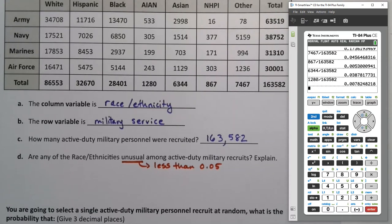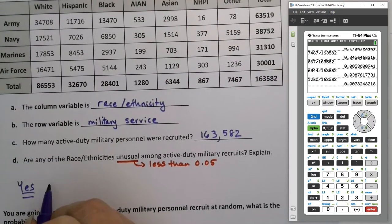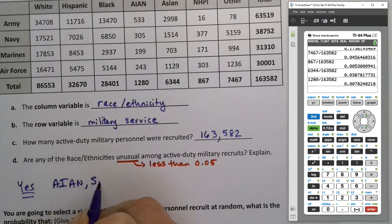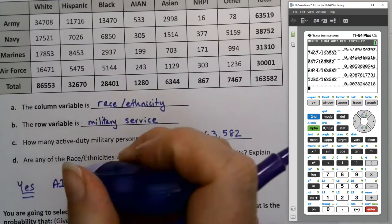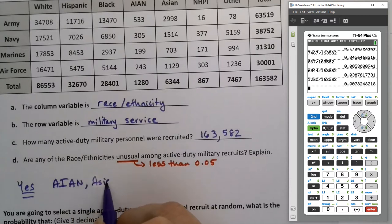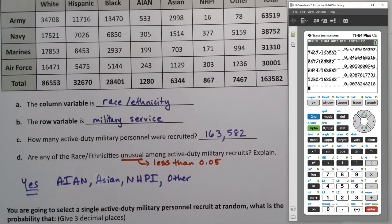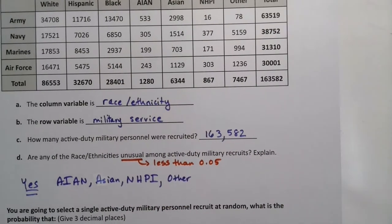So indeed, are any of the race ethnicities unusual? So we would say AIAN, Asian, NHPI, Native Hawaiian Pacific Islander, and other are all unusual because they all have less than 5% probability.